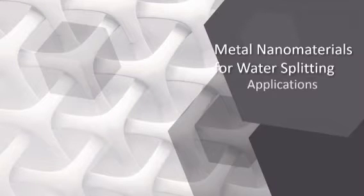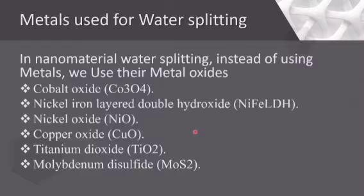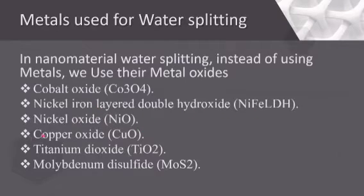Hello guys, namaste. I am Jagdish from the Department of RBC College. Today we are discussing water splitting by using metals at the nanoscale. We are not using metals directly; we are using their metal oxides, mainly cobalt oxide, nickel iron layered double hydroxide, nickel oxide, copper oxide, titanium oxide, and also molybdenum disulfide.